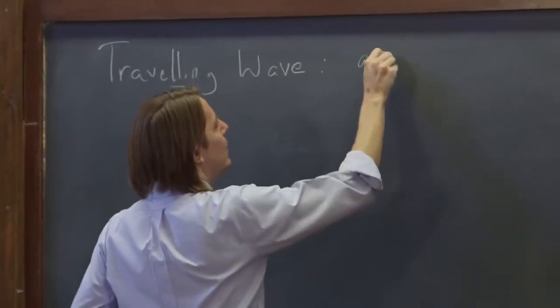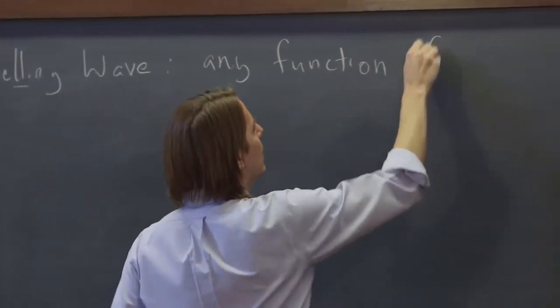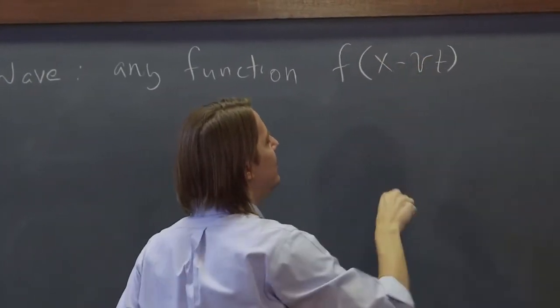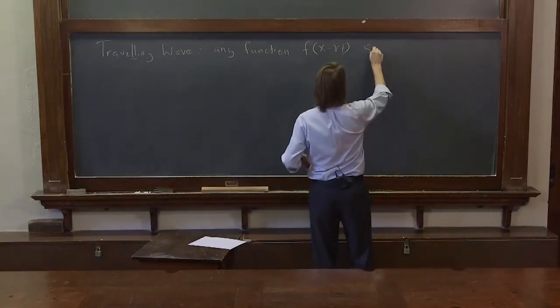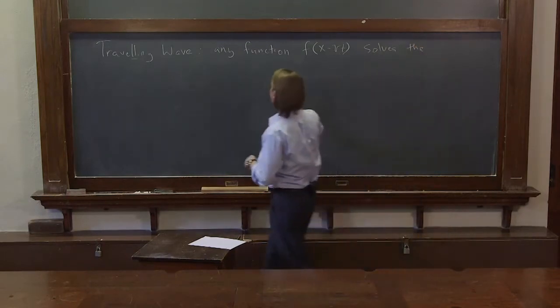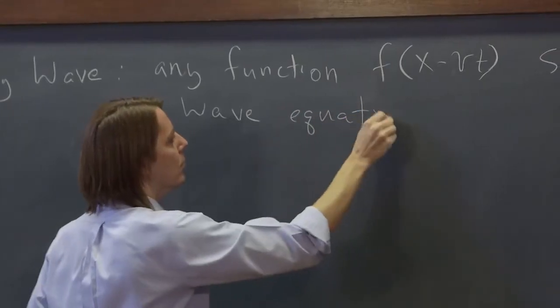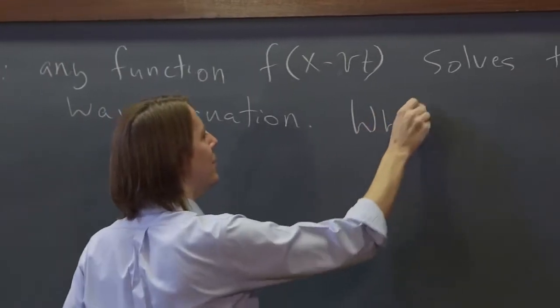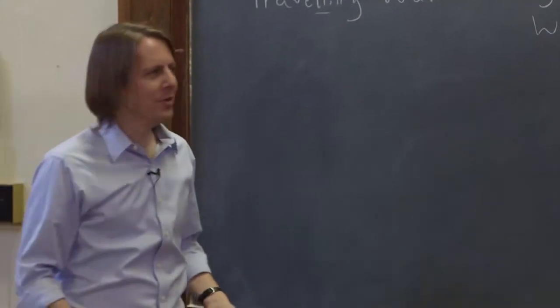So traveling wave, the way you define it mathematically, any function of the form f of x minus vt solves the wave equation. Well, how could that be? Any function, we don't have to do any work.